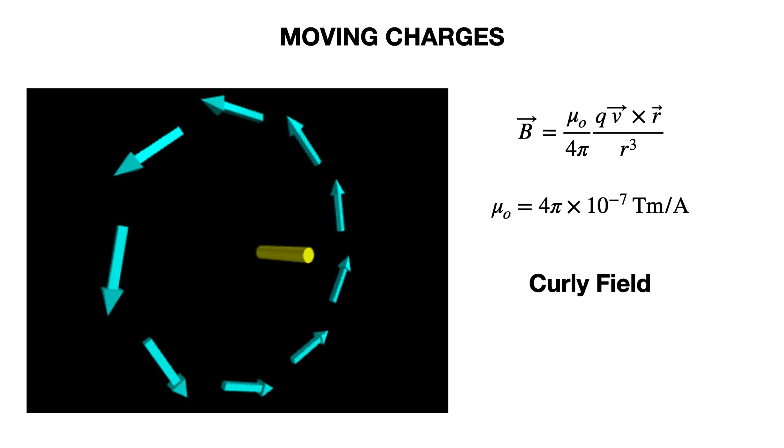Then we have the magnetic field due to moving charges. In this case, I'm showing part of an electric current. I can calculate the magnetic field, and it looks extremely different. I call this the curly magnetic field, since it makes these circular patterns around the moving charges.